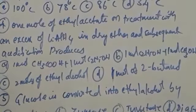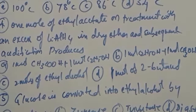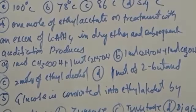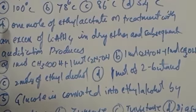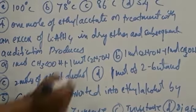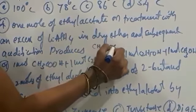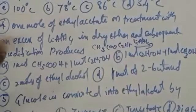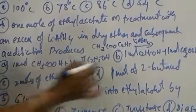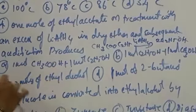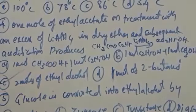One mole of ethyl acetate on treatment with excess lithium aluminium hydride in dry ether and subsequent acidification produces: ethyl acetate (CH₃COOC₂H₅) is an ester. It undergoes reduction in the presence of LiAlH₄ (reducing agent) in dry ether to give 2 moles of ethyl alcohol. So option C — 2 moles of ethyl alcohol — is correct.